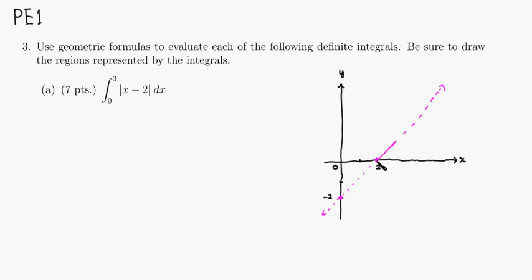We just need to flip this part over to the other side of the x-axis, which is going to look something like this. So that's the absolute value of x minus 2.